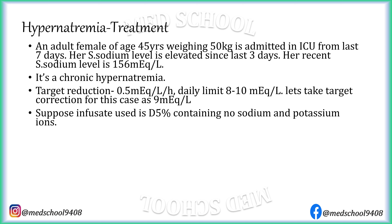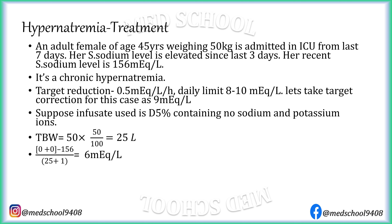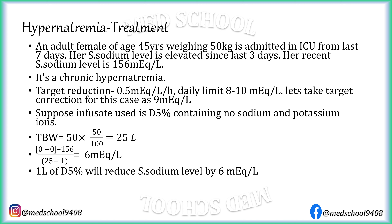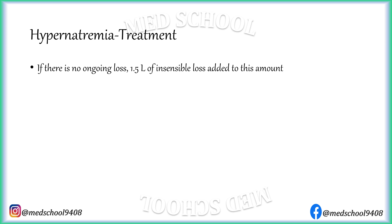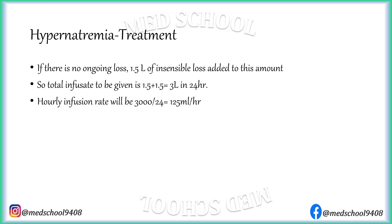Suppose the infusate used is 5% dextrose, containing no sodium and potassium. As this is an adult female, percent body water will be 50%, so total body water is 50% of 50 kg, which is 25 litres. Putting values into the formula gives 6 mEq per litre, meaning 1 litre of 5% dextrose will reduce serum sodium by 6 mEq per litre. To reduce serum sodium by 9 mEq per litre, 1.5 litres of 5% dextrose needs to be infused. With no ongoing loss, adding 1.5 litres of insensible loss gives a total infusate of 3 litres in 24 hours, at an infusion rate of 125 ml per hour.